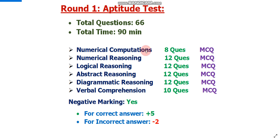Please note there is no individual timing per section — you have a total of 90 minutes for all six sections combined. Numerical computations: 8 questions, MCQ type. Second section is numerical reasoning: 12 questions, MCQ type. Third section is logical reasoning: 12 questions, MCQ type. Fourth section is abstract reasoning: 12 questions, MCQ type.